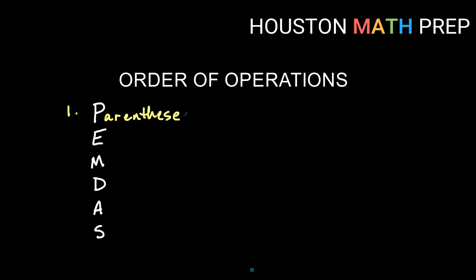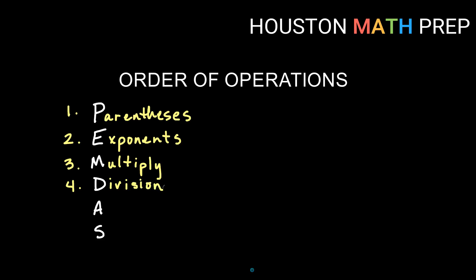So we would do any sort of parentheses or brackets first. The next step after parentheses is any exponents that we have — after we've done as much with parentheses as possible, we then do exponents. After exponents we have M and D: M being multiply and D being divide. We do multiplication and division all as one stage, evaluating left to right. After M and D, A and S stand for add and subtract, and we do those straight across left to right as well.